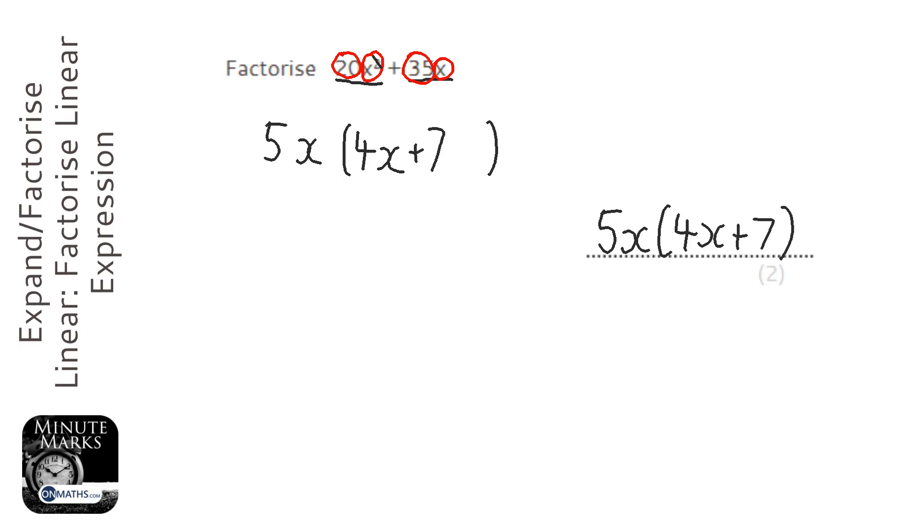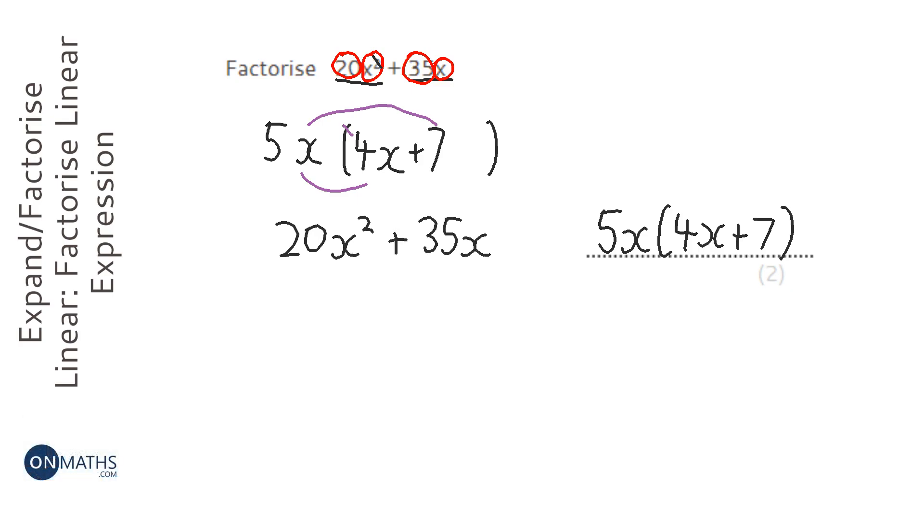Now I can check this by doing a quick smiles and rainbows. And you can expand it in any way that you know how. So that's going to be 20x squared plus 35x. So we know it's correct.